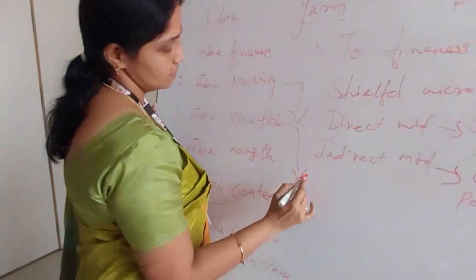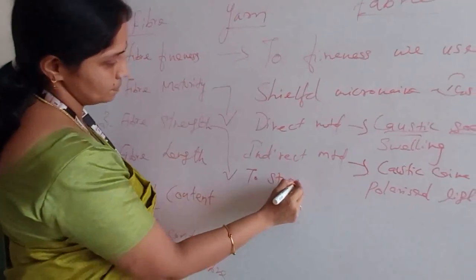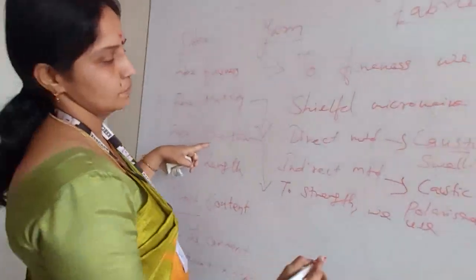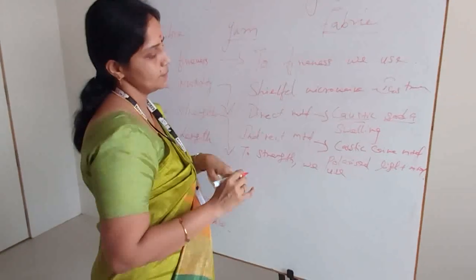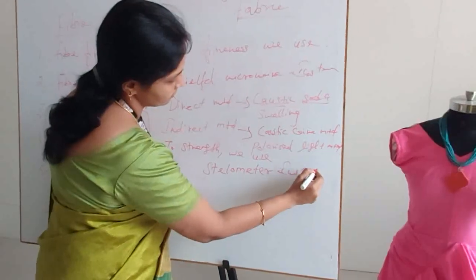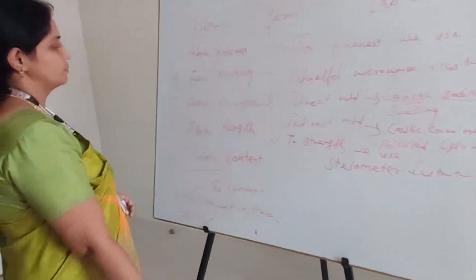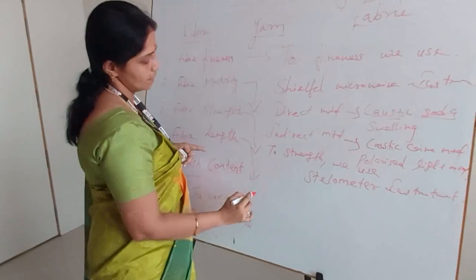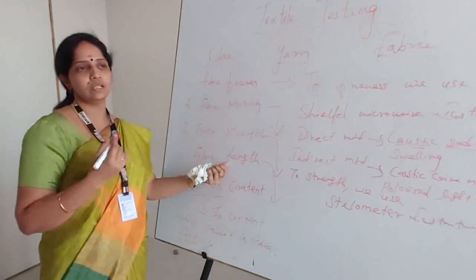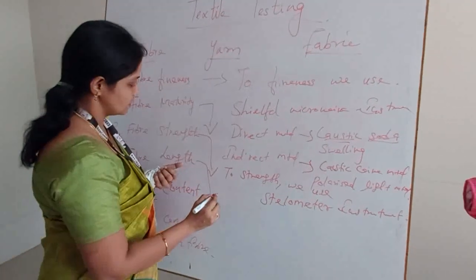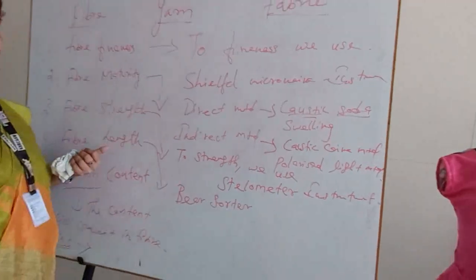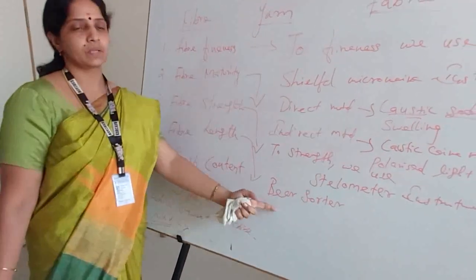The third parameter is fiber strength. To identify the strength of the particular fiber, we use the Stelometer instrument. The next parameter is fiber length. Without having proper length or minimum length, we cannot select a fiber for the next process. To identify the fiber length, we use the Fibrograph instrument. The instrument used to identify the fiber length is called the Fibrograph.